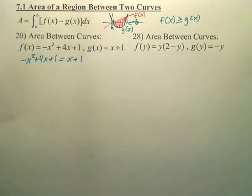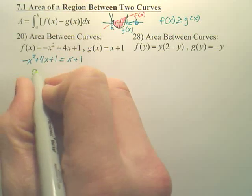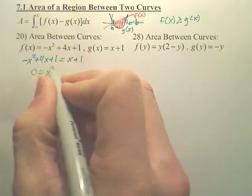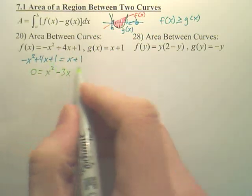When we set that equal, we're now probably going to try to do factoring to solve this. Actually, I'll move it all this way to give you that negative in front. We get 0 equals x squared. When I minus this over, it looks like I get minus 3x.